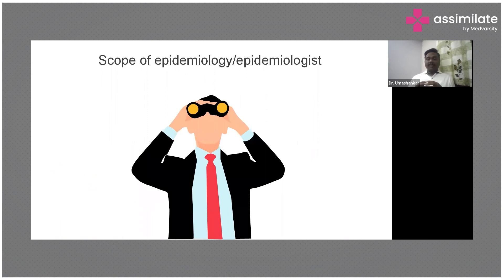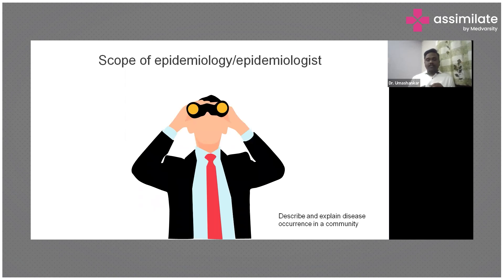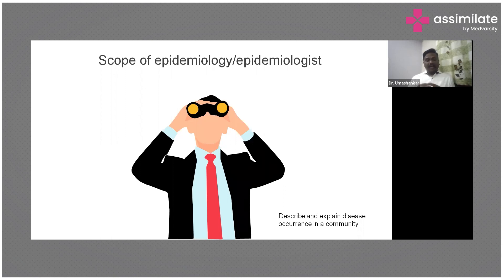What do epidemiologists do? What are our roles and scope? The first role is that epidemiologists try to describe and explain the disease occurrence — what is the disease, what are the symptoms, who is getting affected, and how it is getting affected. We basically describe things and then try to find the cause. We describe the disease in the community and what is the occurrence of that disease.